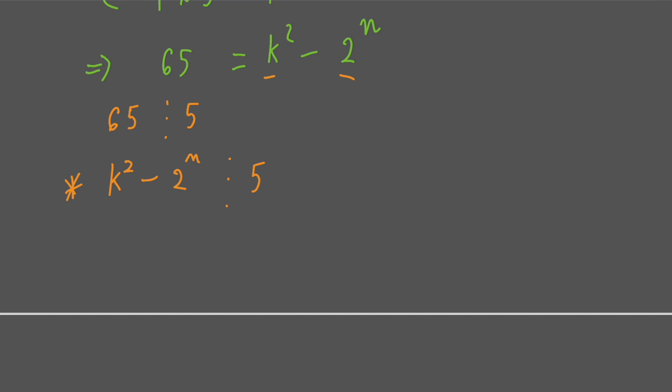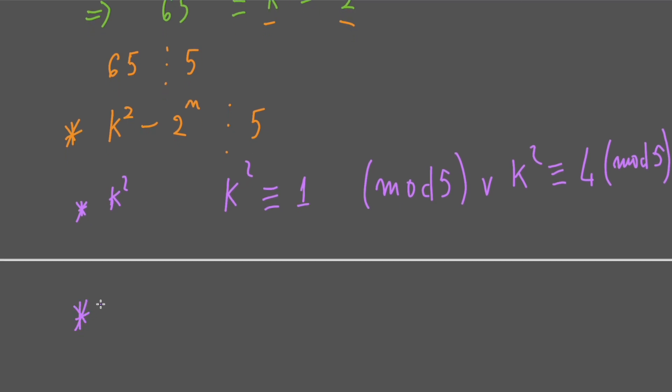So then we can check the condition about k^2. This is a square number and as we know that a square number is congruent to 1 mod 5, or it will correspond to 4 mod 5. This means the remainder of k^2 divided by 5 equal to 1 or 4. Then we consider about 2^n with n is odd number.